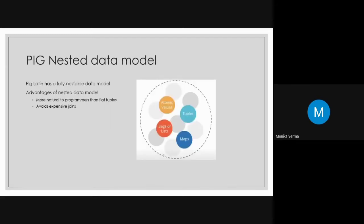Pig supports nested data models too. Inside a tuple you can have atomic values, and inside bags you can have tuples, similar to lists in Python. So it is a nested data model. Pig Latin has a fully nestable data model. The advantage is that it becomes easy for programmers — rather than using flat tuples, it has multiple data types and it avoids expensive joins.